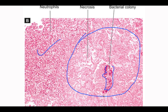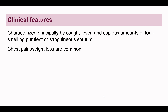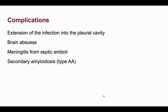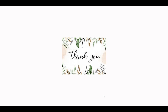The clinical features are mostly fever and cough. If the lung abscess is communicating with the airway, there can be foul-smelling sputum. Chest pain and weight loss can also be present. Complications include spread to adjacent organs, pleural cavity involvement, brain abscess via emboli, meningitis, and in long-standing cases, amyloidosis can also develop.